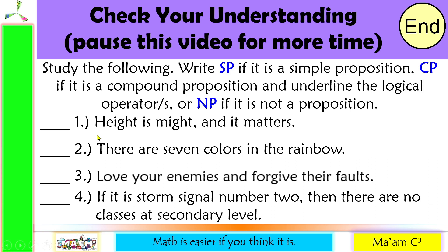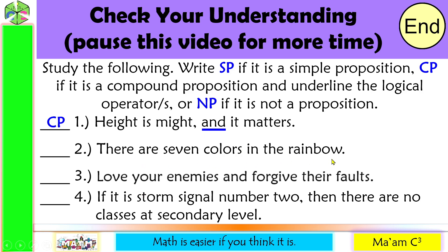Let us answer. Number one: 'Height is might and it matters.' This is a compound proposition. One proposition is 'height is might' and another is 'height matters.' The logical operator used here is 'and.' Number two: 'There are seven colors in the rainbow.' Can we further break this down? No. So this is a simple proposition — it is a declarative sentence and you can find its truth value. Yes, there are seven colors in the rainbow.